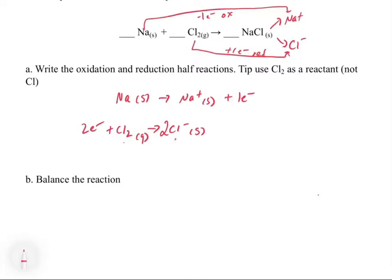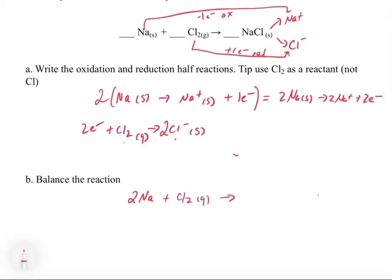Now that we have our half reactions, step four is to balance the electrons. We put a 2 in front of the Na, giving us: 2Na(s) → 2Na⁺ + 2e⁻. Then when we balance the full reaction, we have: 2Na(s) + Cl₂(g) → 2NaCl(s). We should always double check: two Na on the left, two Na on the right, two Cl on the left, two Cl on the right — everything checks out. Charge is balanced and mass is balanced. That shows you the two primary examples of how to balance a simple redox reaction.